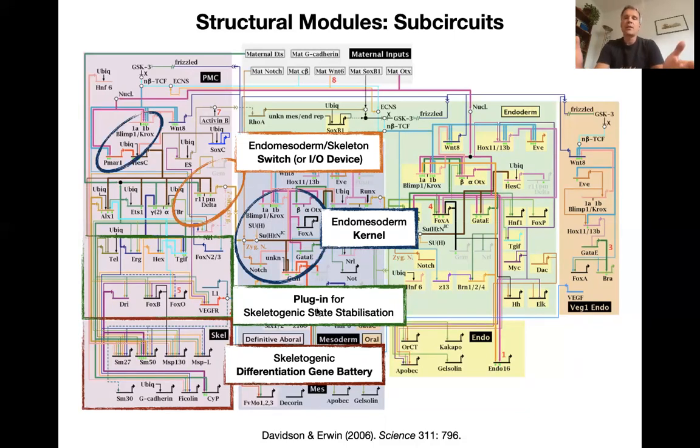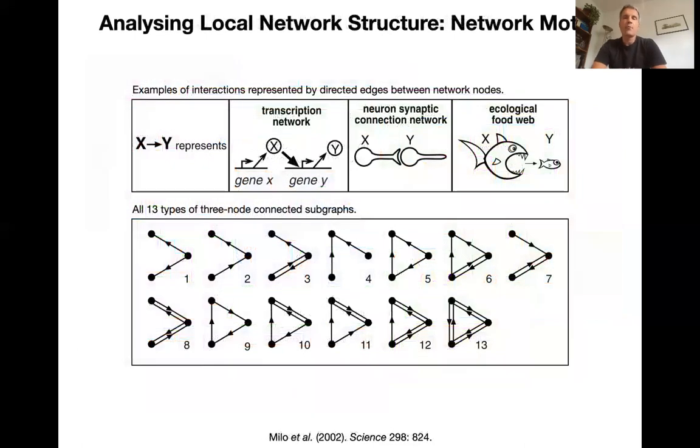So this is a non-mathematical way of subdividing a network. But we want to be a little bit more rigorous than that, maybe. And there's a very interesting approach that you could take. And that is not only looking at local structure of the network, but also looking at how often a certain structure reoccurs in a network. So this is work from about 20 years ago, which introduced the idea of a network motive.